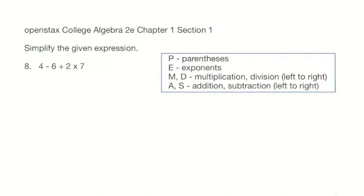In this problem we need to simplify the given expression. We will of course need to use order of operations. So we have 4 - 6 + 2 × 7.